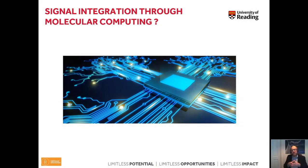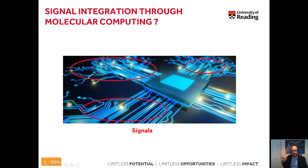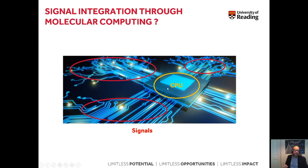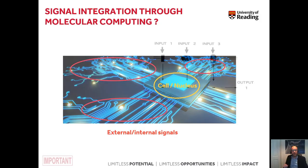In general, signaling in a cell and the signals that are received and processed can be compared to a computer or a smartphone. There are many signals surrounding the cell and they need to be controlled and processed in the nucleus. This can be compared to different signals in a PC — for example, input from a mouse or a keyboard — which then needs to be processed by the central processing unit. The central processing unit is the nucleus within the cell.